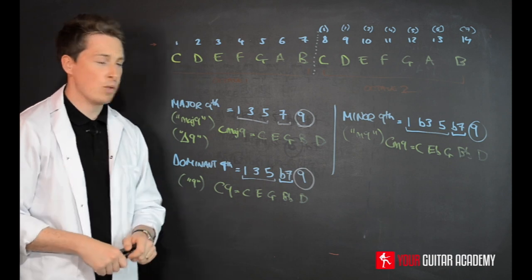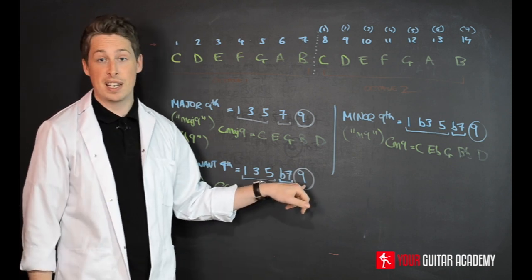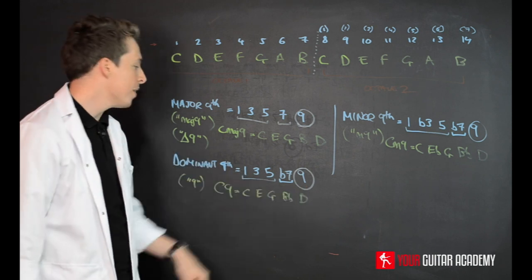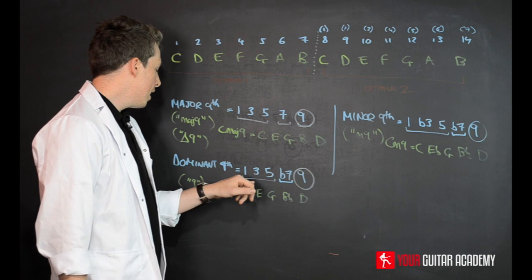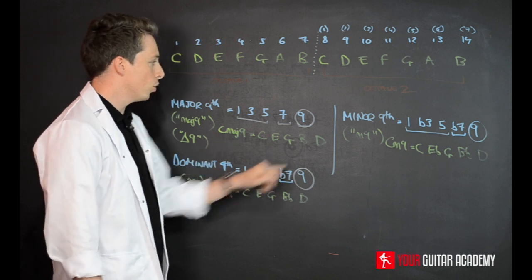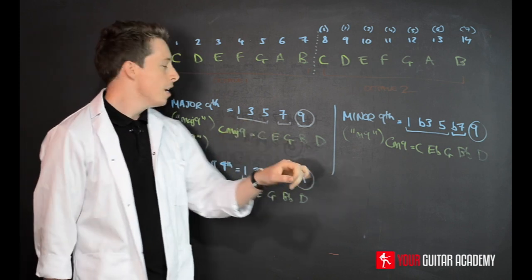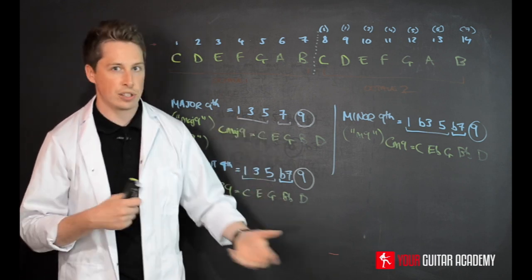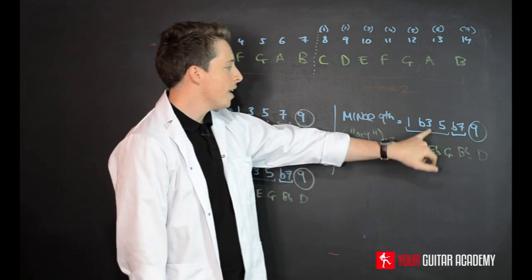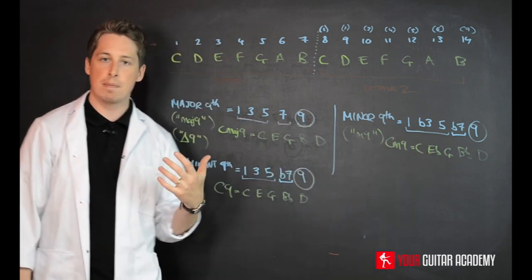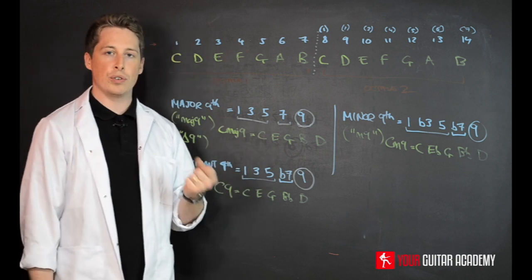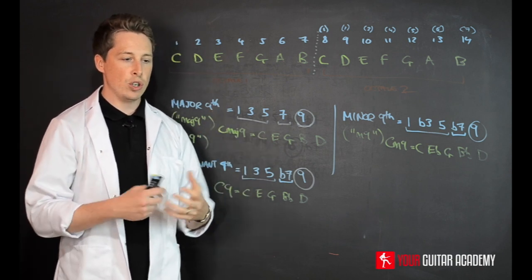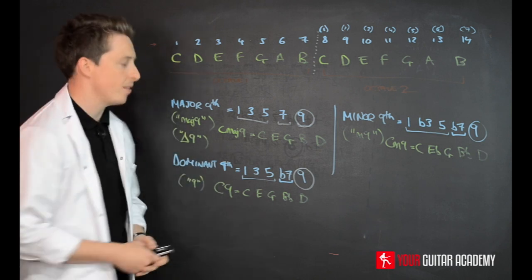The first thing when you're dealing with a ninth chord is that we need to establish the important notes here. Obviously, a really important note is going to be the nine. That's going to be super important because it's the ninth chord. You can't have a ninth chord without a nine. Equally, you can't have a major dominant chord or minor ninth chord without some kind of third. The third that's natural defines it as some kind of major-esque thing or potentially dominant. And the flat third defines it as a minor thing. So that is absolutely crucial.